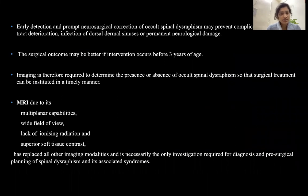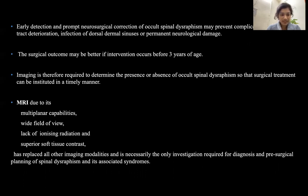Early detection and prompt neurosurgical correction of occult spinal dysraphism can prevent complications like urinary tract deterioration, infection of dermal sinus, and permanent neurological damage. The surgical outcome is better if intervention is carried out before three years of age. MRI, due to its multiplanar capabilities, wide field of view, lack of ionizing radiation, and superior soft tissue contrast, has replaced all other imaging modalities and is the primary investigation required for diagnosis and pre-surgical planning of spinal dysraphism and its associated syndromes.